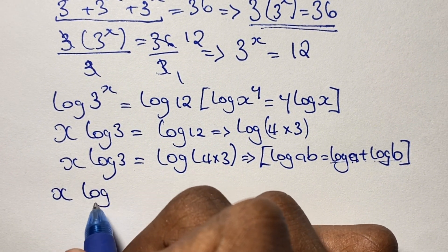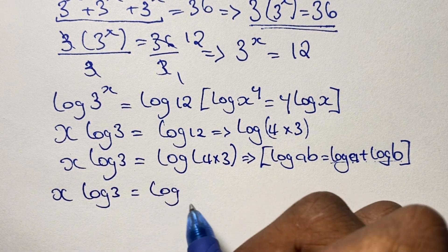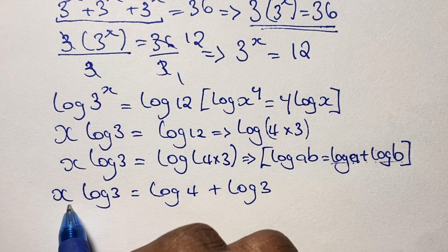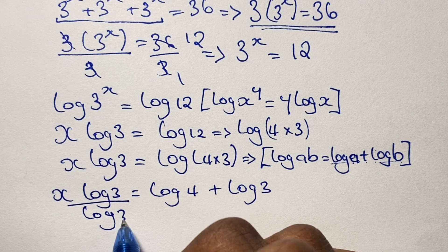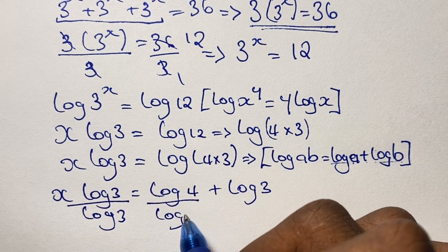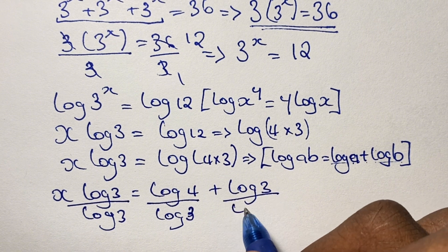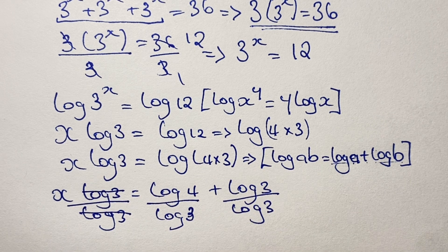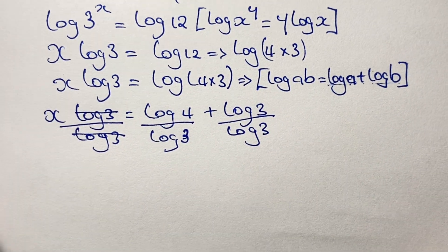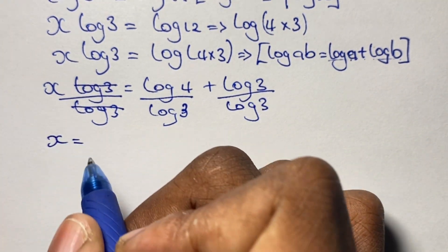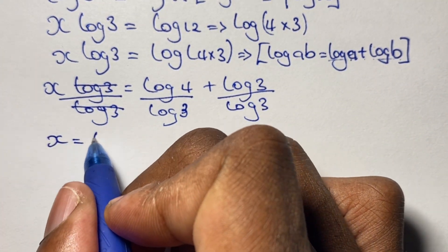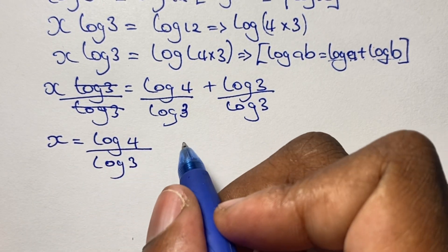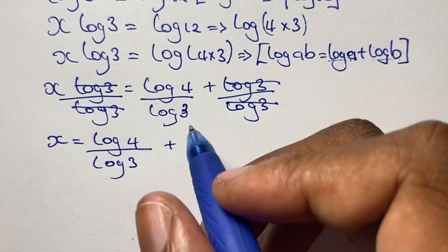So from here we say x times log 3 is equal to log 4 plus log 3. Now we divide both sides by log 3: x·log 3 over log 3 equals log 4 over log 3 plus log 3 over log 3. Therefore x equals log 4 over log 3, and since log 3 over log 3 is 1, we have x equals log 4 over log 3 plus 1.